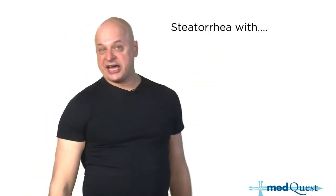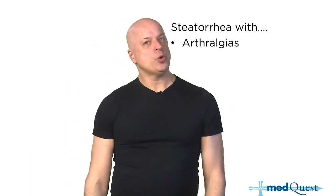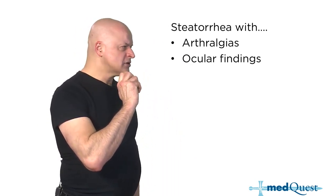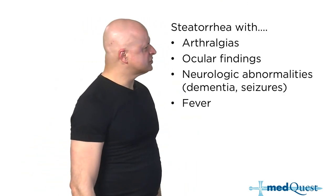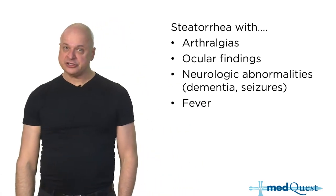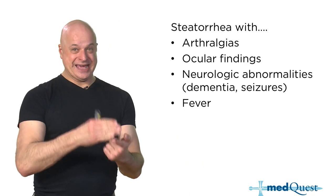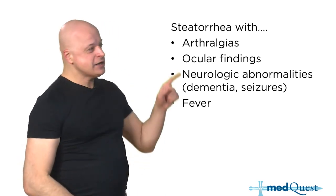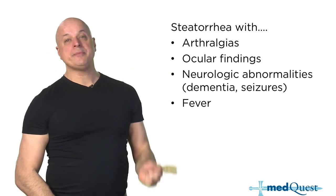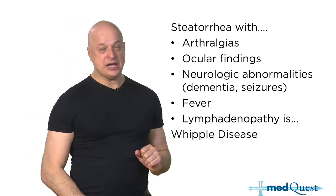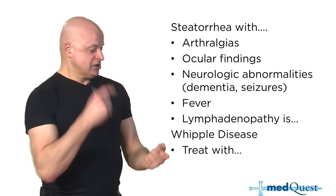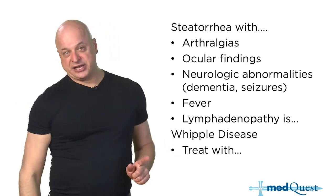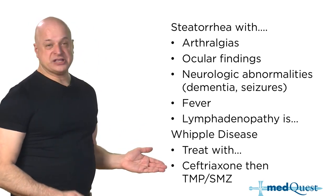Steatorrhea happens with all of them, but arthralgias, ocular findings, and neurological findings — now that's different. Steatorrhea means malabsorption of vitamins A, D, E, and K, weight loss, and positive Sudan black. When you have steatorrhea plus arthralgias, ocular findings, and neurological findings, that's how you know it's Whipple's disease — Tropheryma whipplei. The most accurate test for celiac, Whipple's, and tropical sprue is bowel wall biopsy. For Whipple's and tropical sprue, you're looking for a bug — that's why you treat with antibiotics: ceftriaxone, Bactrim, or doxycycline.